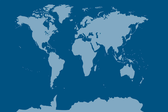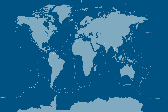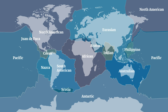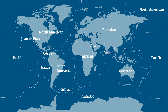Because the lithosphere is also brittle, it is broken or divided up into 14 distinct and separate pieces, much like the pieces of a puzzle. Each piece moves together as one single body, moving in the same direction. Where two plates meet, a boundary is formed, represented as a line on a map.